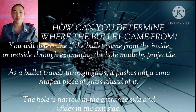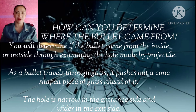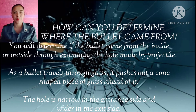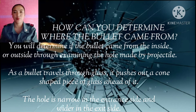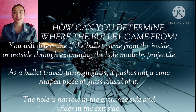This is the way to determine where the bullet really came from — whether it came from inside the house or outside. By examining the glass fracture, you can see that the entrance of the bullet produces a smaller hole, while the opposite side — the exit side — produces a wider hole.